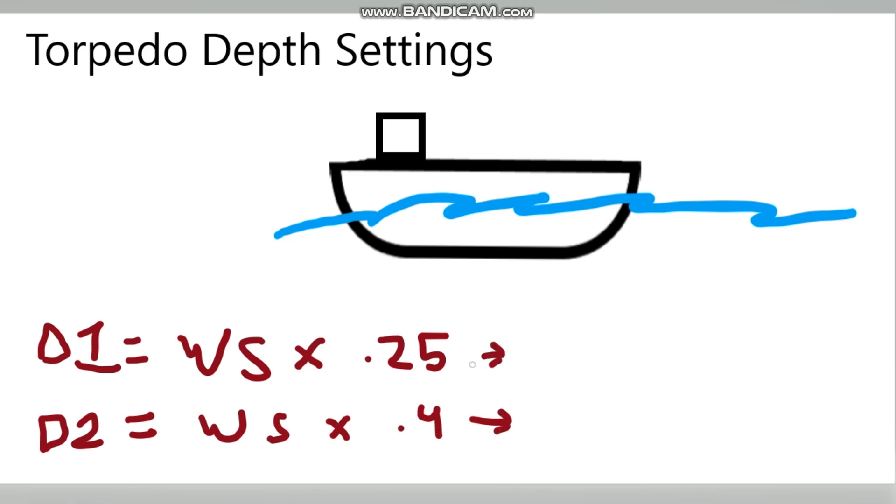If I want the best possible result on this boat, I'm going to do my Depth 2, which is wind speed. Let's say wind speed is 15 times 0.4 is going to be 6 meters. In other words, I have to set my torpedo 6 meters or more for this torpedo to have the least amount of premature detonations or misses possible.